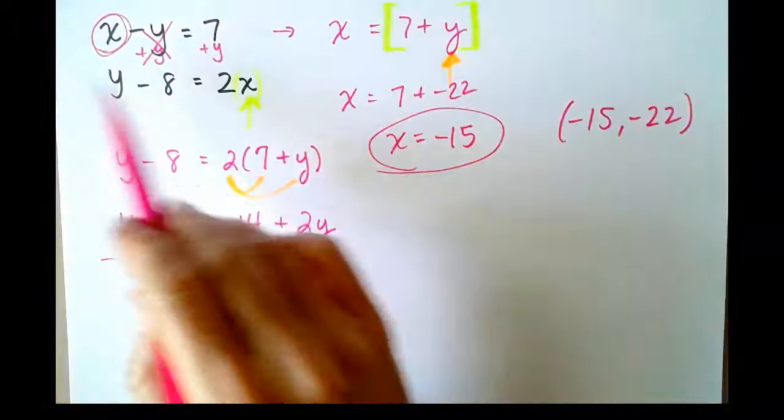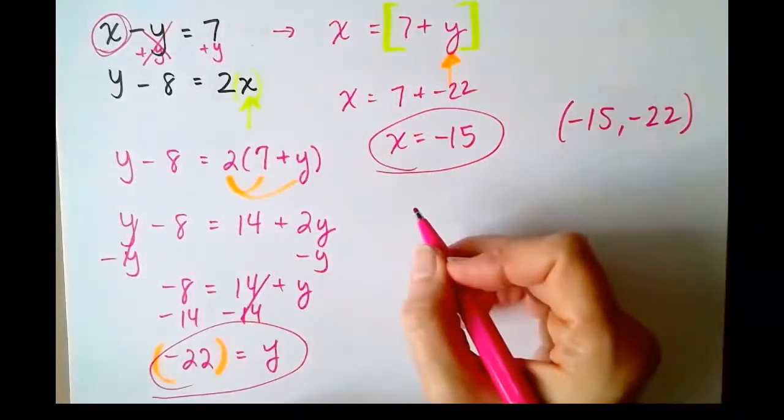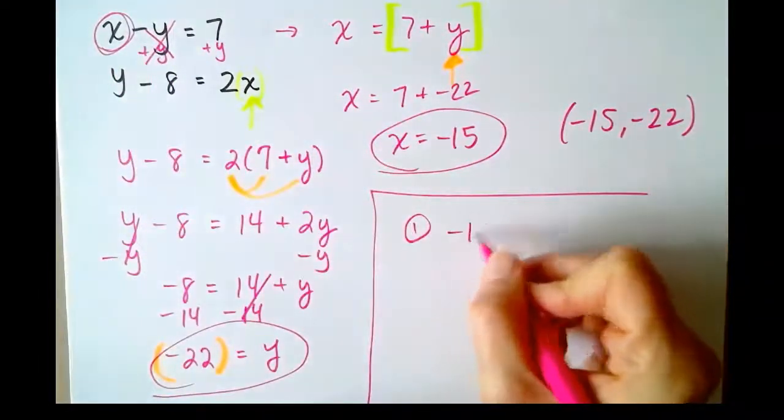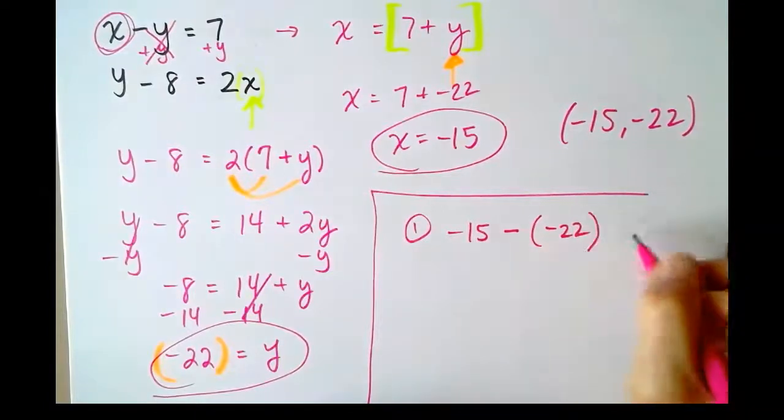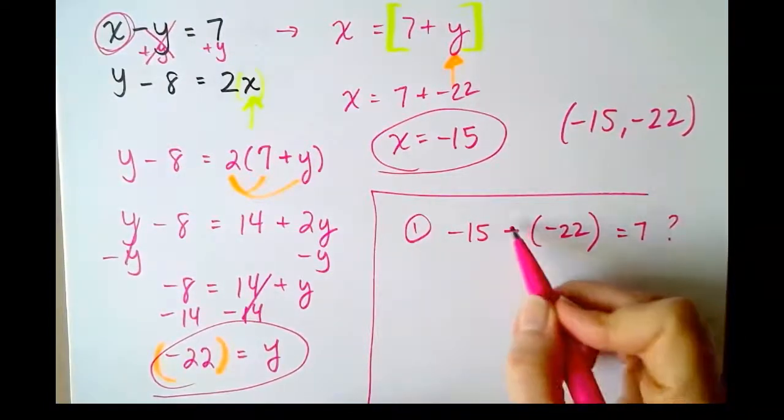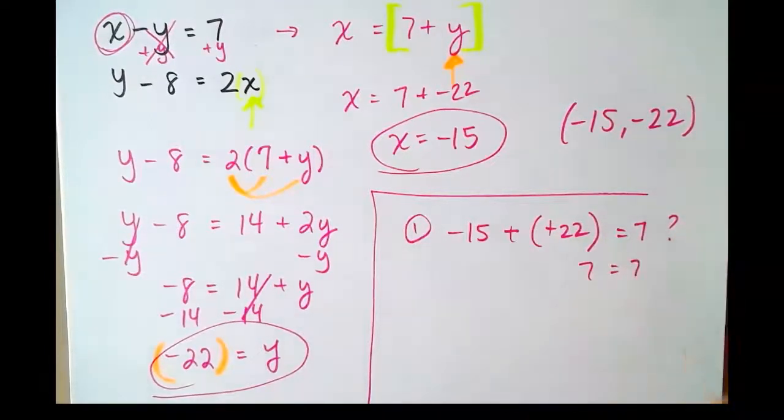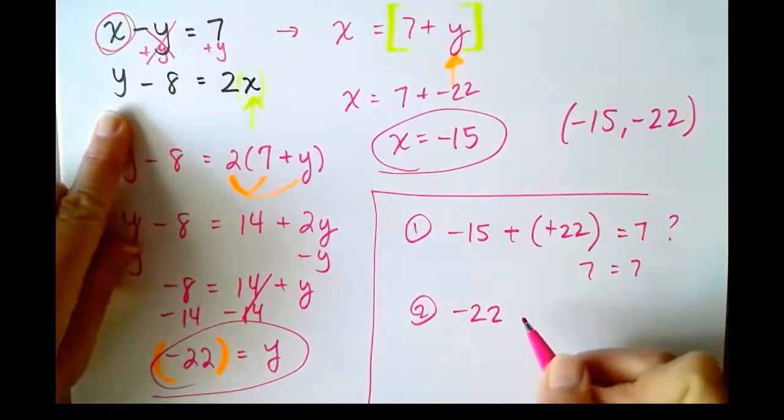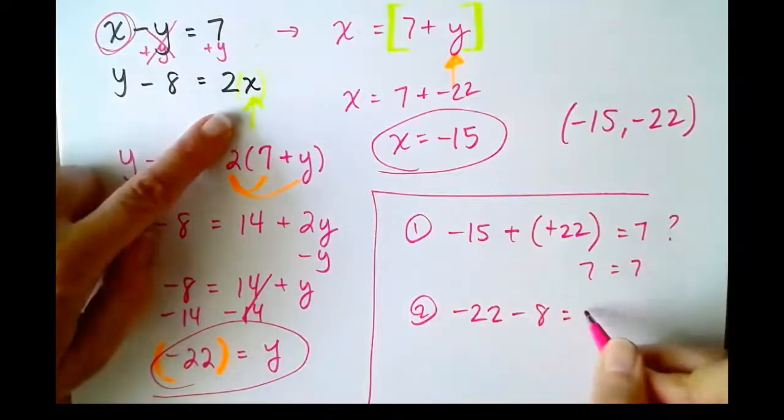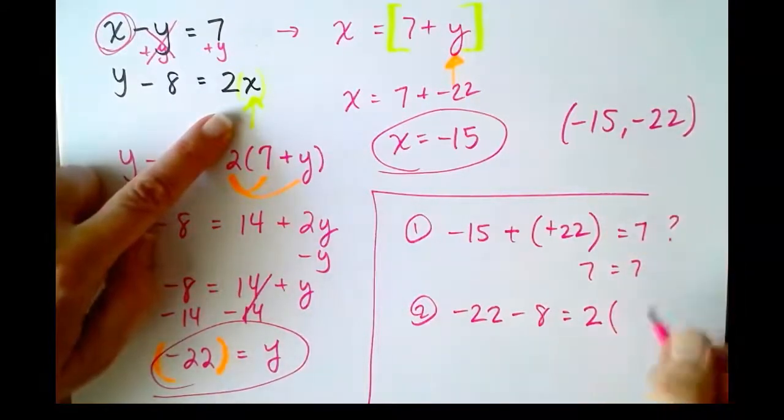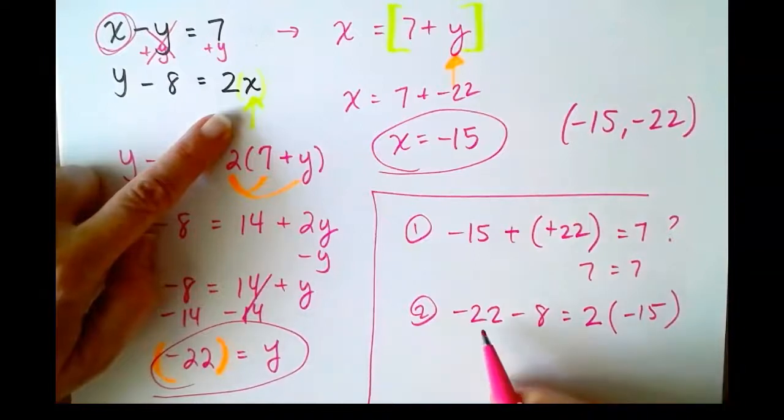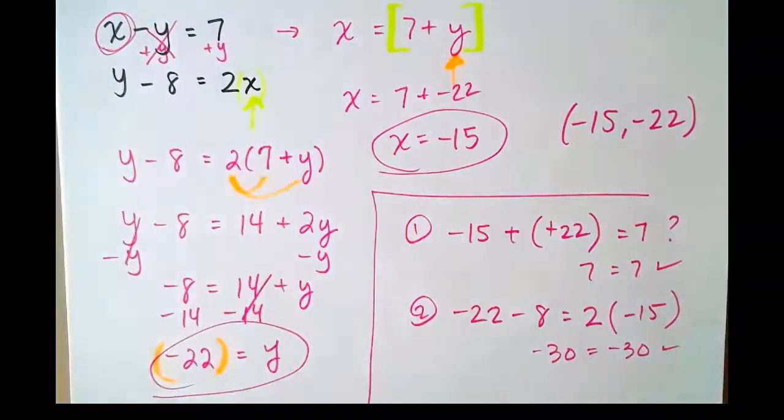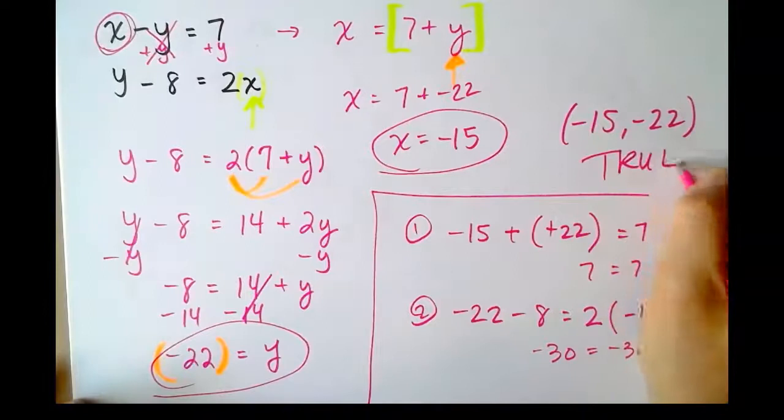And we can check it by plugging it back into both of those equations. Let's do that quickly. So first equation, x - y, does it equal 7? Well, minus a negative turns into plus a positive. And yes, 7 is equal to 7. Second equation, y minus x, so -22, y minus 8, excuse me, equals 2 times x. x is -15. -22 minus 8 is -30. And 2 times -15 is -30. They both check. Therefore, our solution is a true solution.